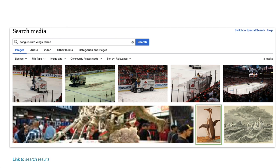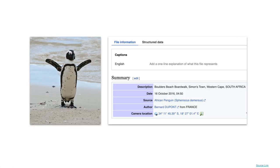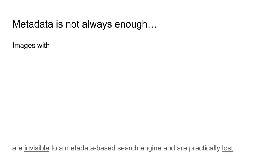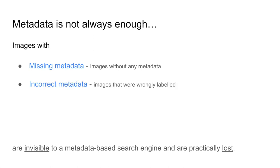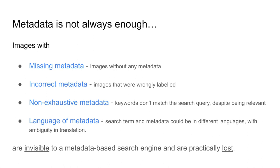out of which only one is relevant. Does it mean there are no penguins with wings raised in this collection? Here is an image of a penguin with its wings raised from Wikimedia Commons. Even though this image is relevant to our search query, it was not returned in the results because the metadata, as you can see here, doesn't have the keywords that match the query — the words "wings raised" don't appear in it. So how do we find images that are invisible to the search engine when the metadata is missing, incorrect, non-exhaustive, or in a different language?